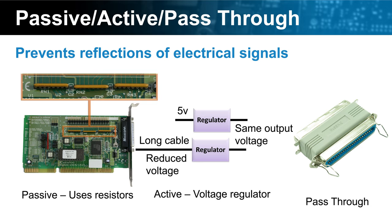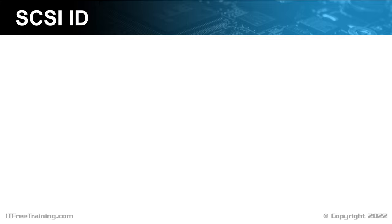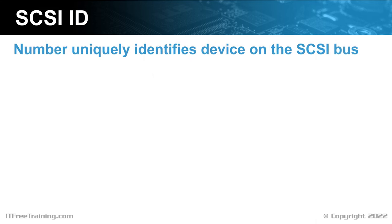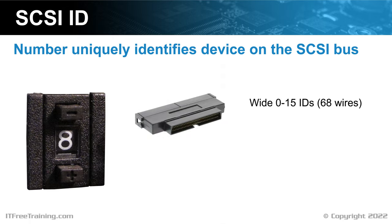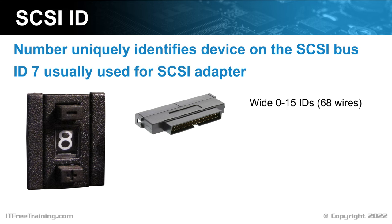Now that we understand how terminators work, let's have a look at how devices on a SCSI cable are identified. SCSI uses a unique ID to identify each device on the SCSI bus. On the back of your SCSI device, there will be a number to indicate which ID the device is using. Often, this SCSI ID can be changed by clicking a button above or below the number to increment or decrement it. In some cases, there may be jumpers on the back of the device to change the SCSI ID. In the case of wide SCSI, the SCSI device will support 16 IDs, starting from zero. The SCSI adapter requires a SCSI ID as well, and generally this will be seven.